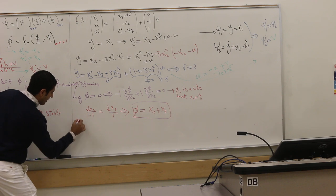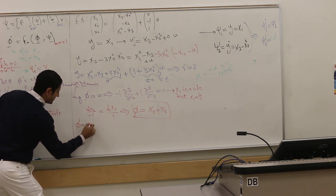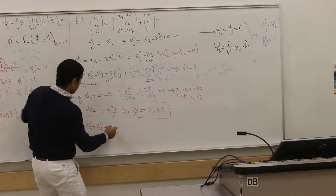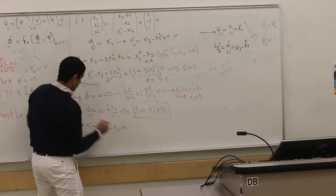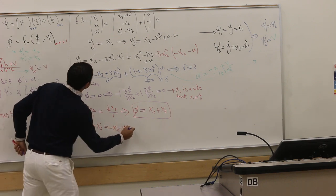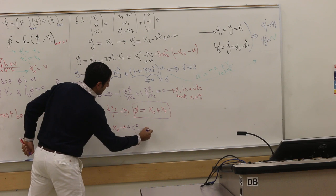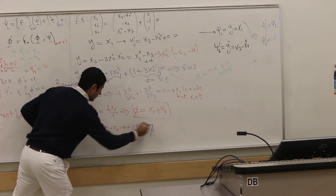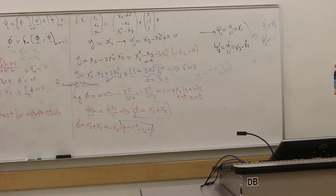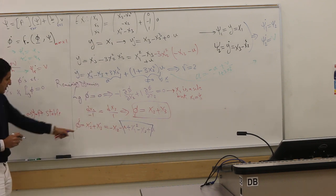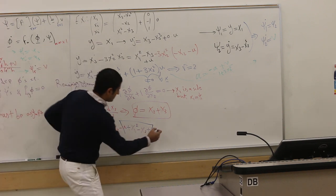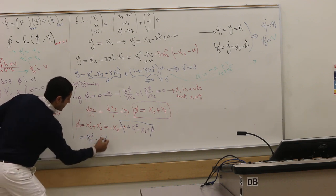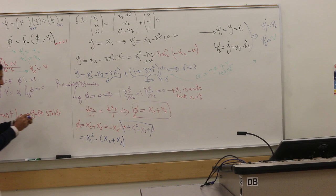Let's get its derivative. φ dot is x₂ dot plus x₃ dot. Please, if you have a question, stop me. x₂ dot is negative x₂ negative u plus x₃ dot is x₁² negative x₃ plus u. By construction, the u will disappear, must disappear. This is like a check for you. φ dot is x₁² minus x₂ plus x₃.